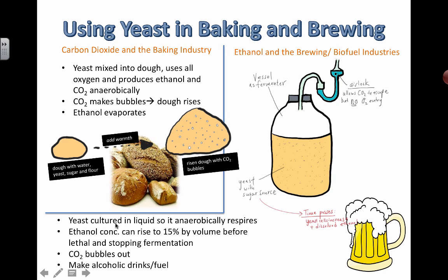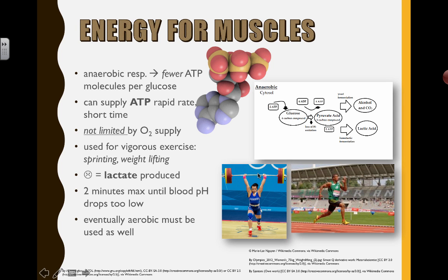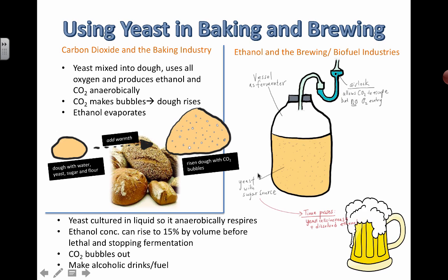The yeast is cultured in liquid, so it anaerobically respires. Ethanol concentration can rise to 15% by volume before it becomes lethal to the yeast, and then you have to stop fermentation. There are certain beverages higher than 15% — those are produced in a variety of different ways. People try to use different sources for the yeast, like wild yeast, and they add extra things to change the flavors of certain types of alcoholic beverages as well.